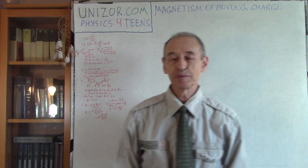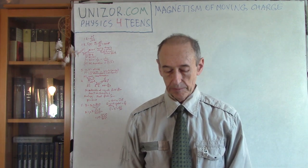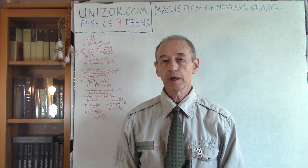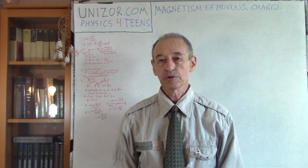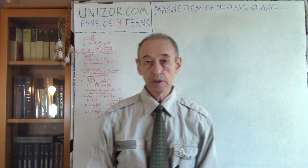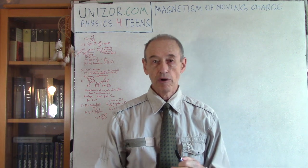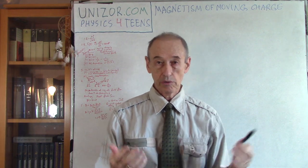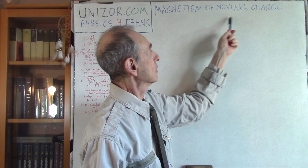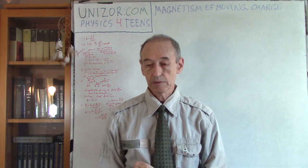Hi, I'm Zor. Welcome to Unisor Education. I would like to talk today about electromagnetic field created by a moving charge — a moving particle which is charged, like a proton or electron, for example. So it's magnetism of moving charge. That's what this lecture is about.